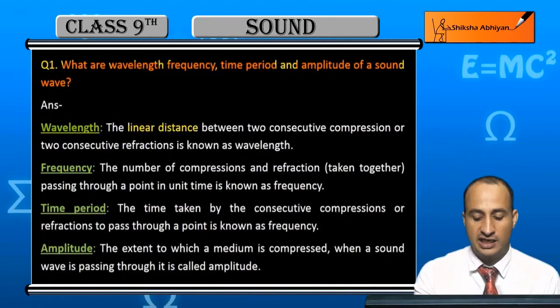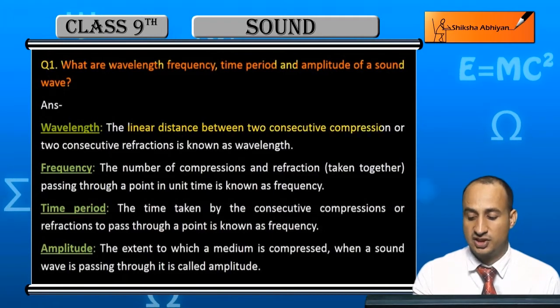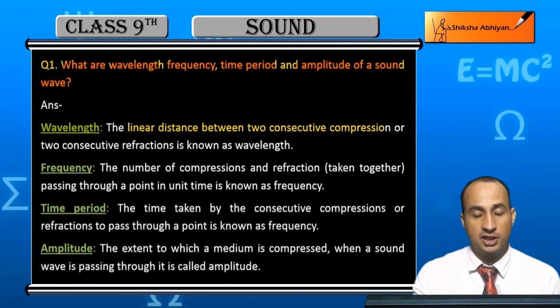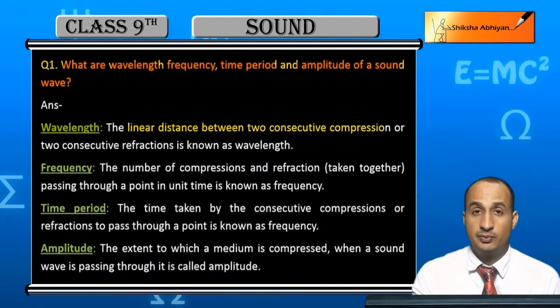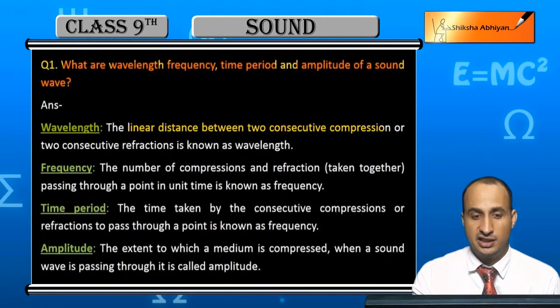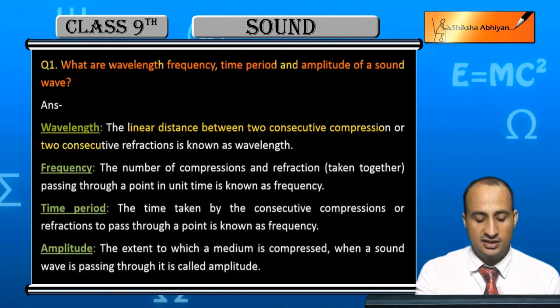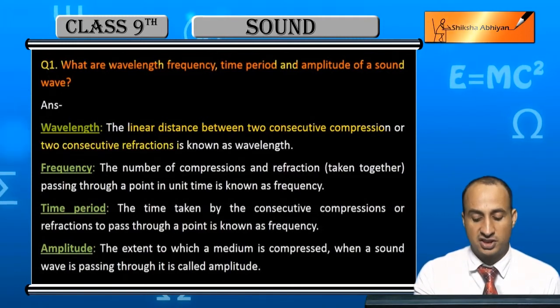What is wavelength? The linear displacement between two consecutive compressions, or two consecutive rarefactions — this is wavelength.